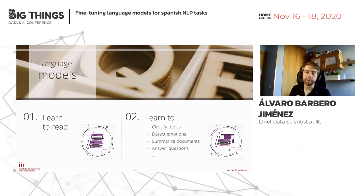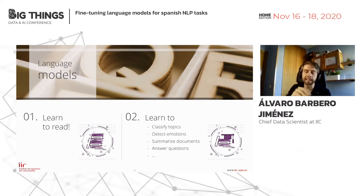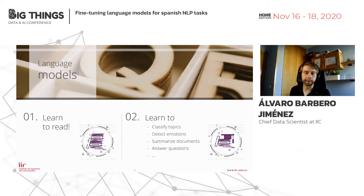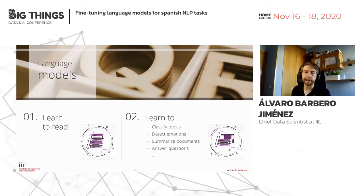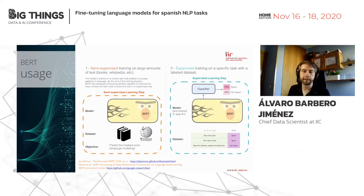In most NLP models we try to do both things at the same time, because we just have a single dataset. A model starts with no knowledge of language and tries to learn everything to classify texts. So what happens if we split the training into these two tasks? This is what language models are currently doing. BERT is probably the most famous — introduced about two years ago by Google — and they perform training in this exact two-step way.